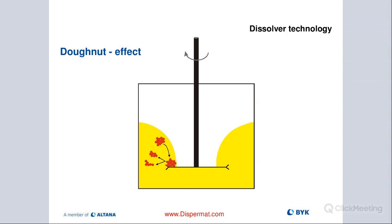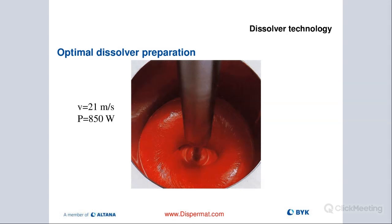At the edges of the blade, this is actually where the separation of our particles takes place — that's where we break up these Van der Waals forces. This also happens below the disc, not just on top. Here you can see a good-looking donut. We are running at 21 meters per second, and at that viscosity range, we are able to put in 850 watts of energy to get that tip speed. That's what you want.